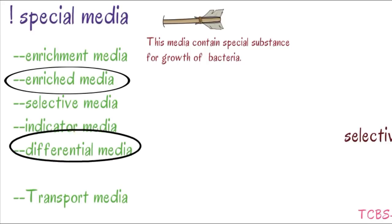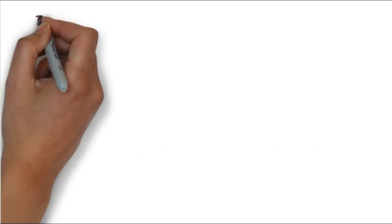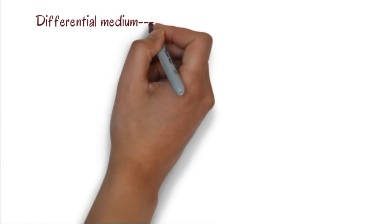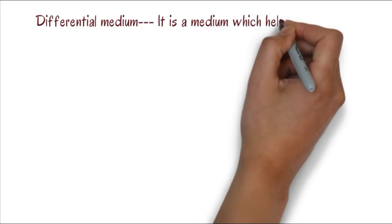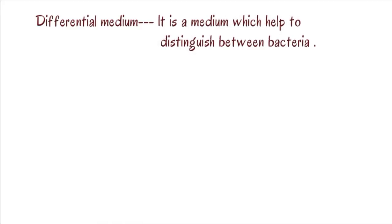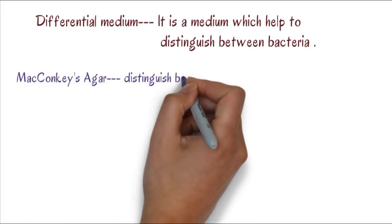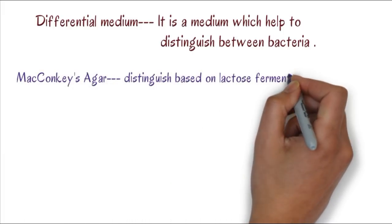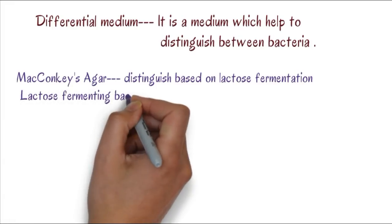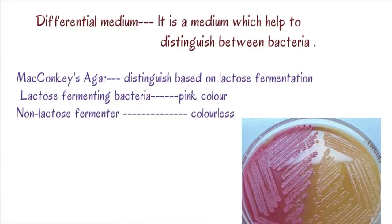Differential media distinguishes between bacteria. MacConkey agar distinguishes based on lactose fermentation. Some bacteria show pink color which are lactose fermenting, some are colorless which are non-lactose fermenting.